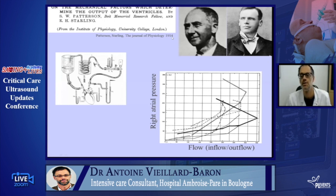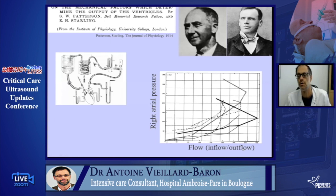Many years ago, it was a very complex experimental study, but you have the main result here. On the X axis, you have the flow — the inflow or the outflow of the heart. They progressively filled the heart and looked at how much blood was ejected into the pulmonary circulation. This is on the same axis because inflow and outflow by definition are the same. On the Y axis, you have the right atrial pressure.